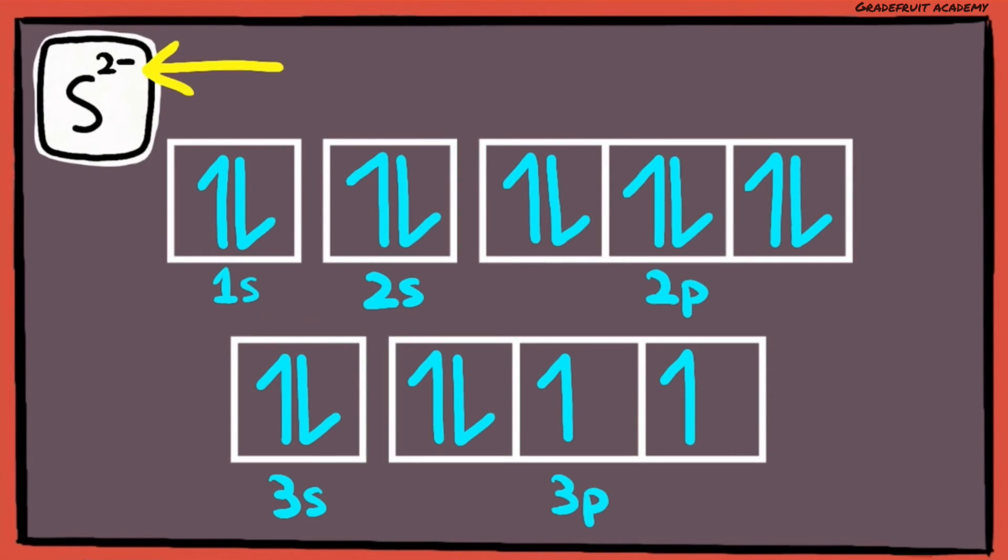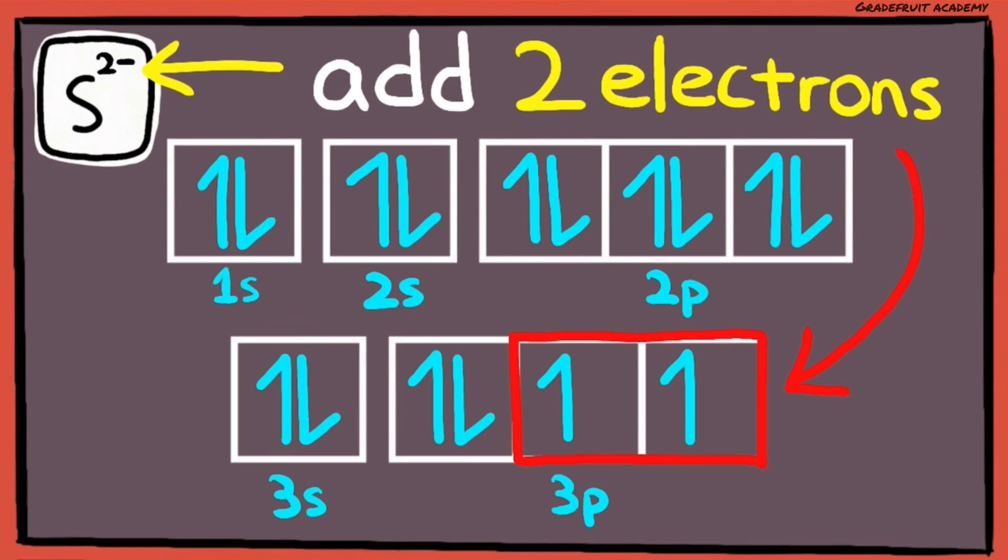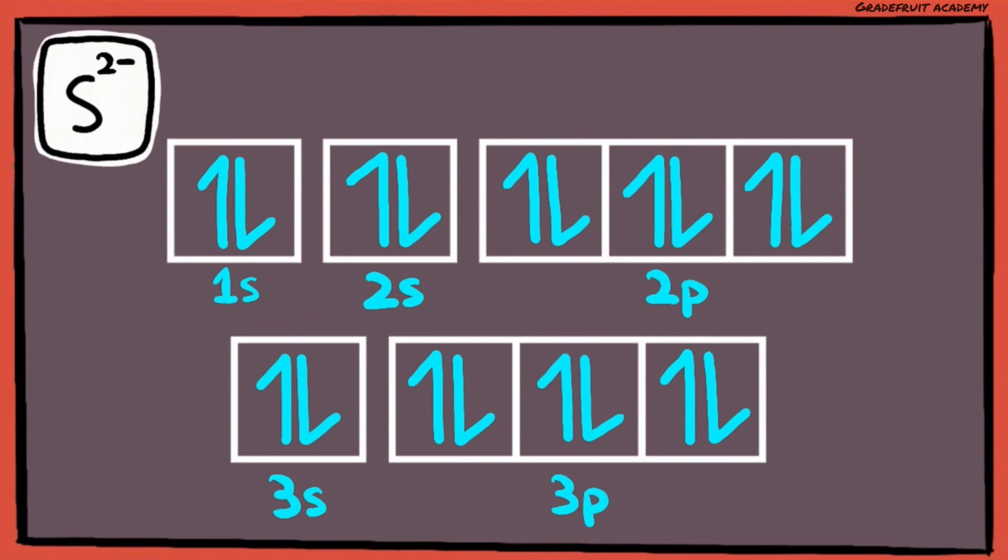Then, the 2 minus here means that we need to add 2 electrons to these 2 vacant 3p orbitals to make it a sulfur anion.